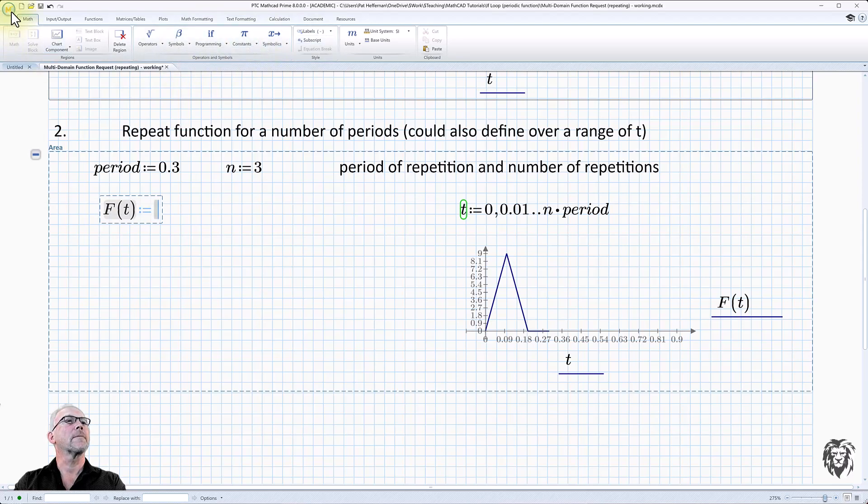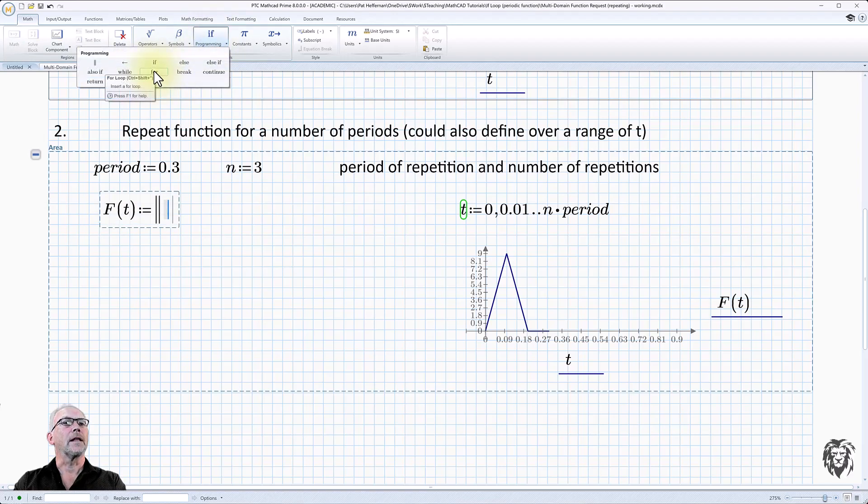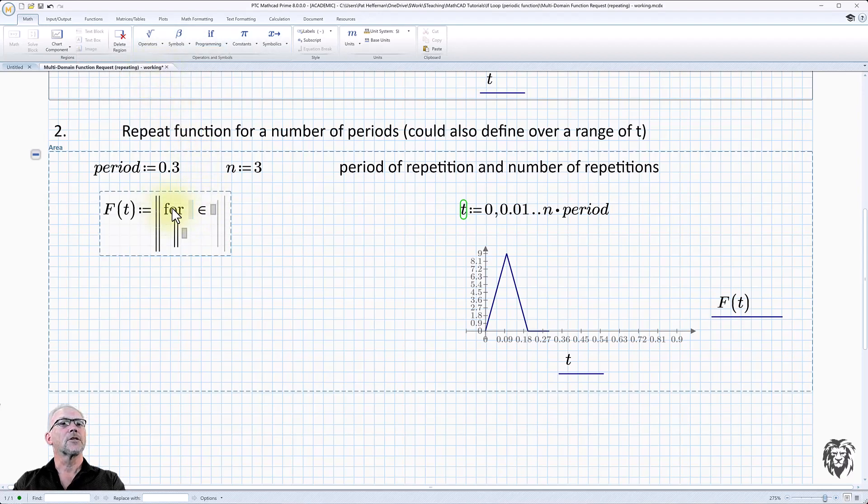So we need to set up our programming. Go up to the math tab, over to programming, create a program, and go right back in, and we're going to use the for loop. You can see it there. Remember, you can always use the help if you're not sure about the syntax or what you're doing.